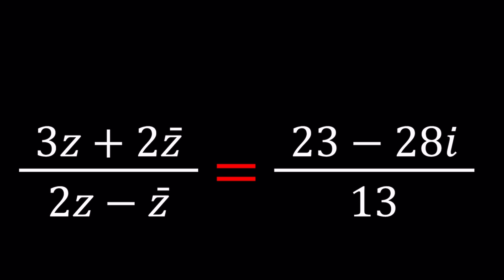What is z? z is a complex number. Complex numbers can be defined as a plus bi where a and b are real numbers and i squared is equal to negative one.